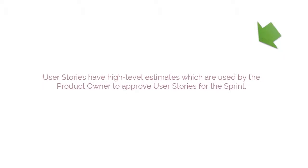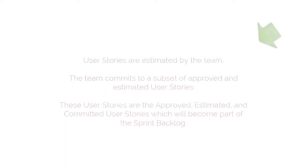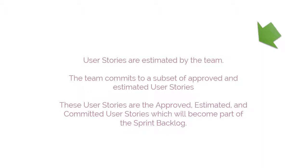The user stories which are input to this process have high-level estimates which are used by the product owner to approve user stories for the sprint. Once approved, the user stories are estimated by the team. After estimation, the team commits to a subset of approved and estimated user stories that they can complete in the next sprint. These become the approved, estimated, and committed user stories which will be part of the sprint backlog.